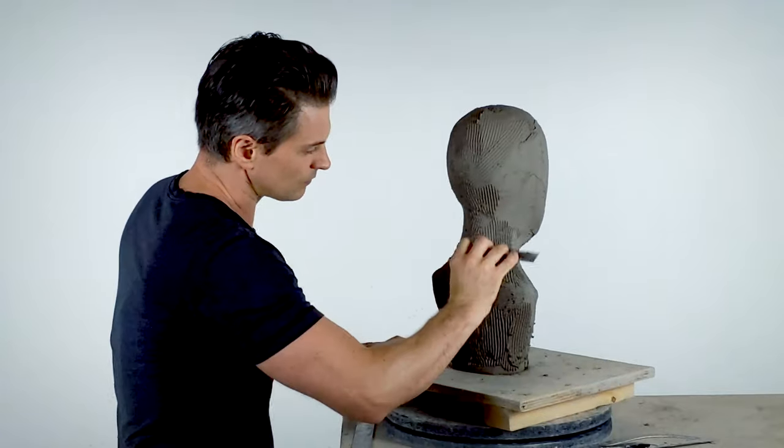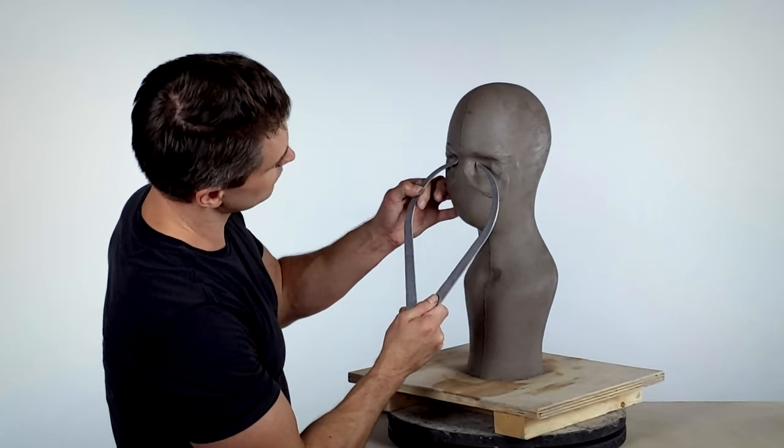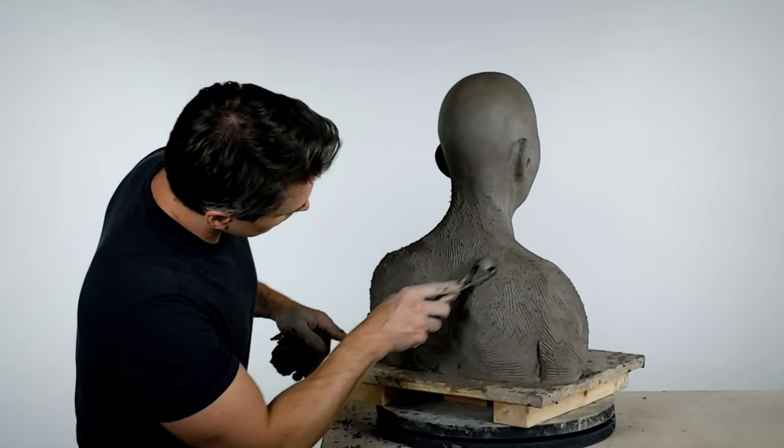we'll load some clay onto the armature and form the blank head, using the primary measurements. In part 5, we'll block in the features. In part 6, we'll build up the neck, shoulders, and chest.